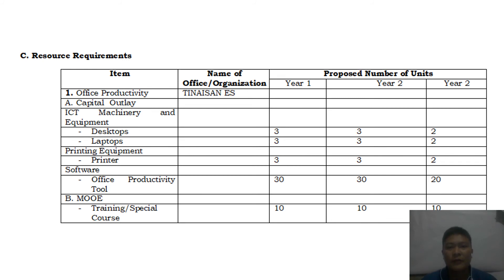For resource requirements under capital outlay and ICT machinery and equipment, the plan is to purchase desktops or laptops: three units in year one, three in year two, and two more in year three. For printing equipment and printers, the plan is to have one printer per classroom over three years: baseline of three printers currently, six by year two, and eight by year three.